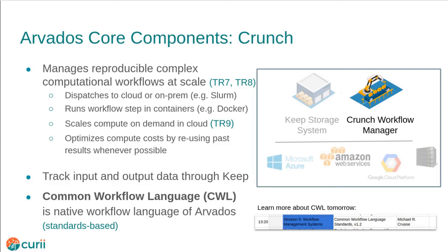Data Commons Technical Requirement 9 is compute resources for cloud-based analysis of data. Requests to run a compute job are submitted through the API. Crunch can easily satisfy the compute request by using the cloud provider's API to request a new compute instance on demand, running the job, and then shutting down the compute instance when it is no longer needed. This allows for scaling up to support huge computations when needed and scaling down to minimize costs.